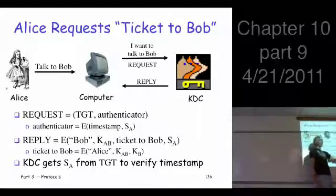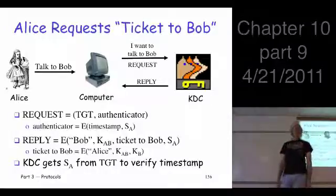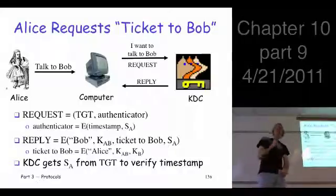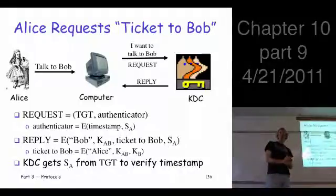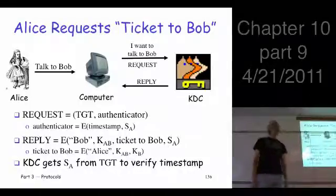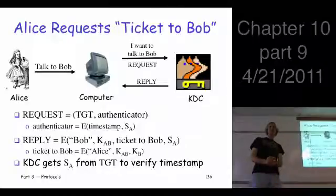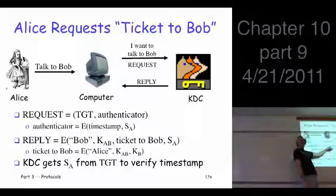It's all encrypted with S sub A. What's S sub A? It's a session key that Alice knows, Alice's computer knows, and who else knows? KDC. How does the KDC know? I thought it was stateless. It's in the TGT, right? So when it decrypts the TGT, it says it's Alice, and it says here's the session key I should use when I create this other stuff to send to her.